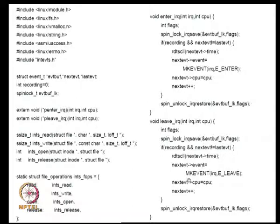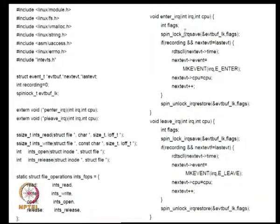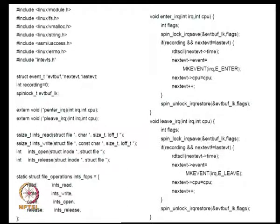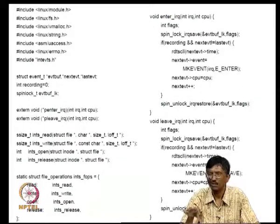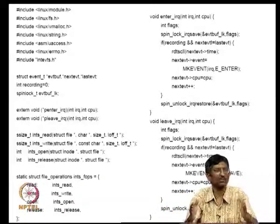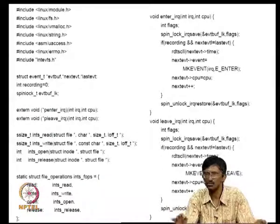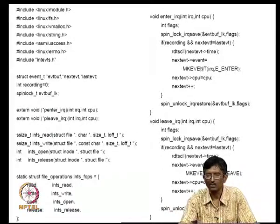In summary, the write code allocates buffers and turns recording on. Then interrupts start happening and the read_timestamp assembly code records which interrupt, which CPU, and what time — until the buffer is full. Once the pointer reaches the end, recording stops and no more events are captured.